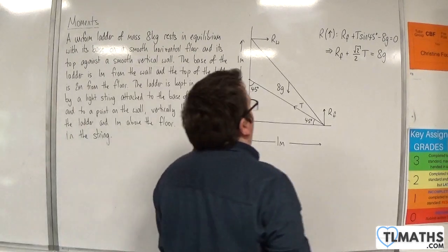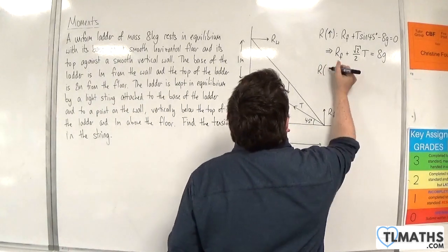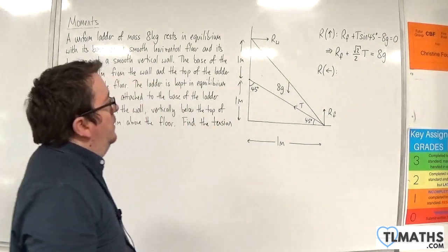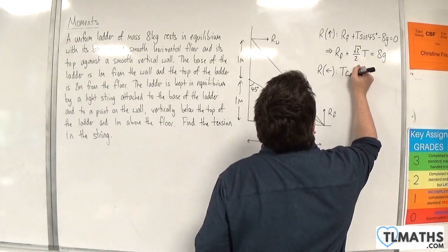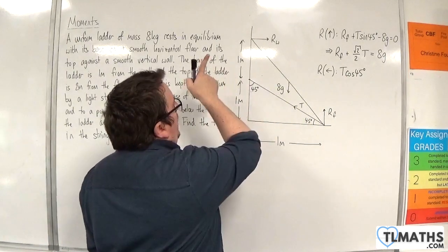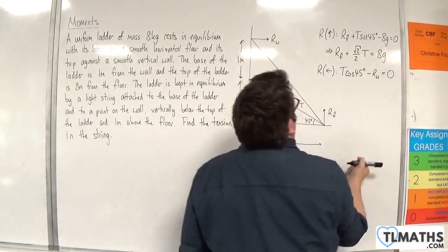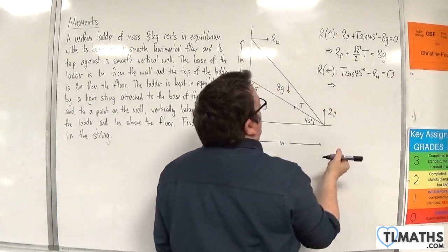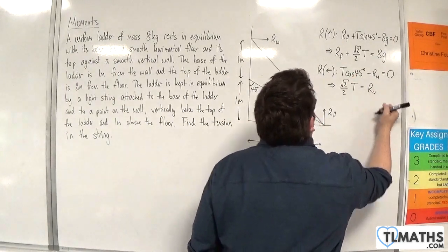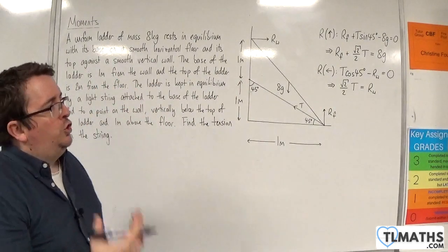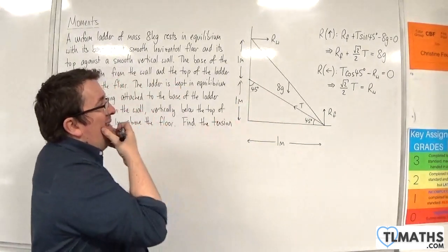So let's now resolve horizontally. So I'm going to take to the left as positive. So we're going to have the component of the tension, which is going to be T cos 45, take away the normal reaction to the wall, is going to be equal to 0. So that's telling me that root 2 over 2, T is going to be equal to RW. Not sure in what way I'm going to use those equations just yet, so I'm just going to leave it as it is.